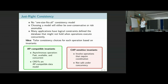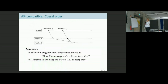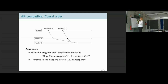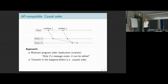An AP-compatible invariant classification is causal order. Assume a client sends a message and then edits it. If on a replica the edit message arrives before the send message, things break. So when your invariants say 'only if a message exists, it can be edited,' that's a strong indication you're looking for invariants requiring causal order. You first want to make sure a precondition holds, then derive the corresponding postcondition — and AntidoteDB guarantees this because it provides causal order.